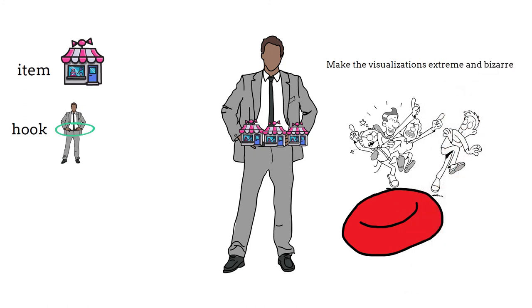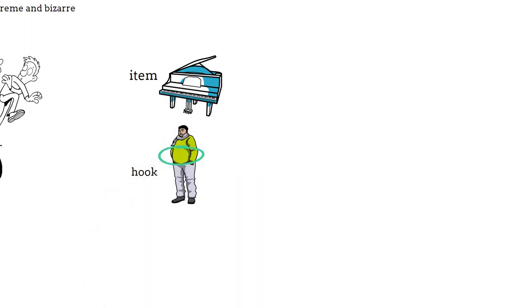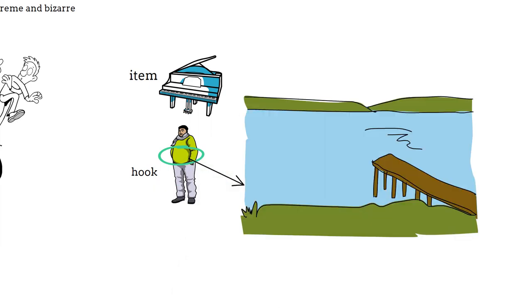The next item is piano. The next hook is the belly button. Imagine your belly button is filled with water. Since your body is huge, the belly button becomes a lake. Visualize there is a huge piano swimming inside the lake. Visualize a living piano with its hands and legs.